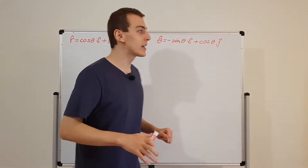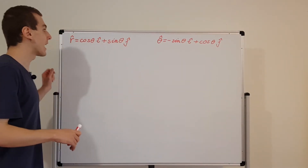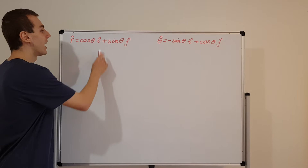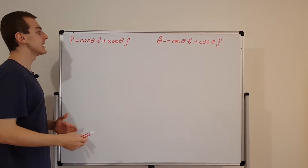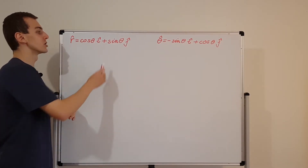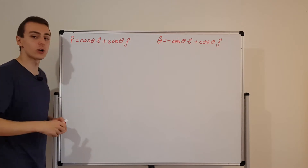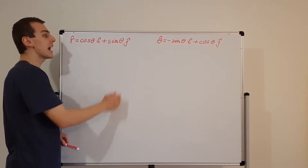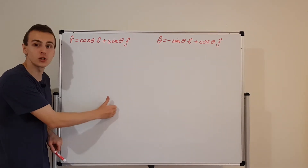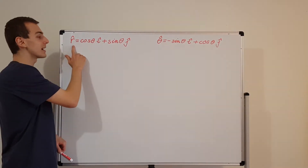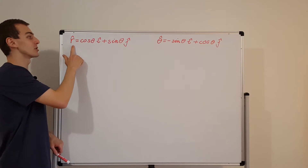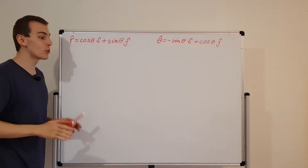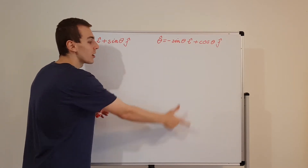Let's start by looking at the definitions of r hat and theta hat in terms of i hat and j hat. i hat and j hat are the Cartesian unit vectors — i hat points in the horizontal direction and j hat points in the vertical direction. r hat and theta hat actually depend on the angle, so their direction is not predetermined.